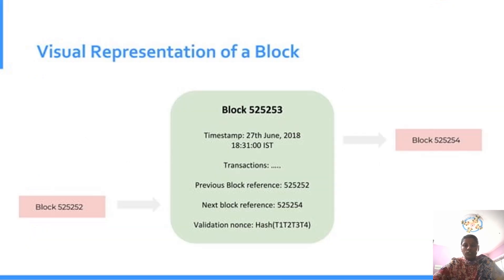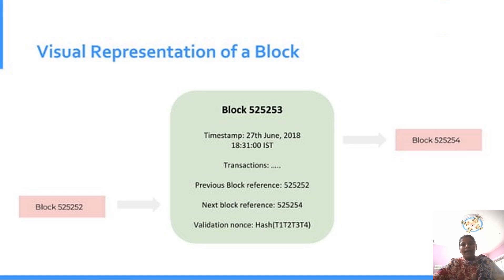Now we can see the visual representation of the block. In green color we can see the present block. Block number is 525253, previous block number is 525252, and the next block number is 525254 — here we have three blocks. The previous block is in pink color and the next block 525254 is also in pink color. In the current green block you will have the timestamp, which records on what date and time you are storing this transaction in the block.